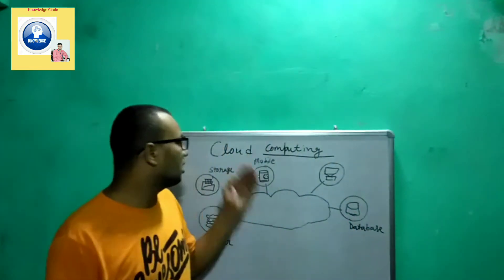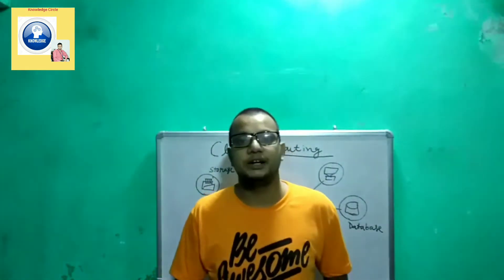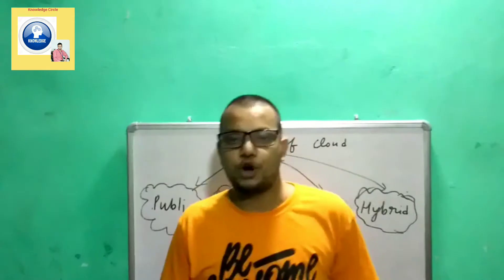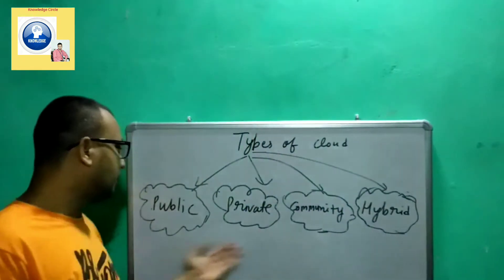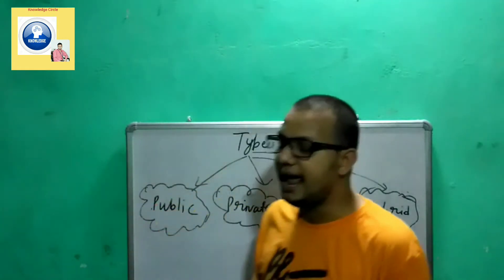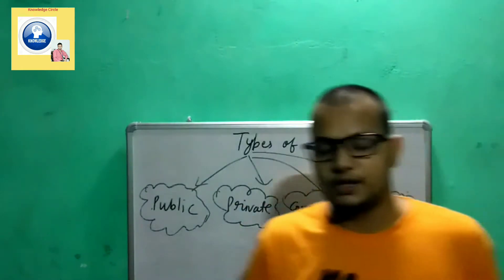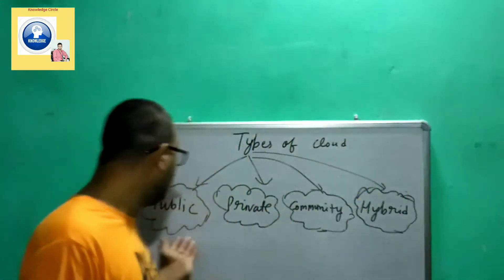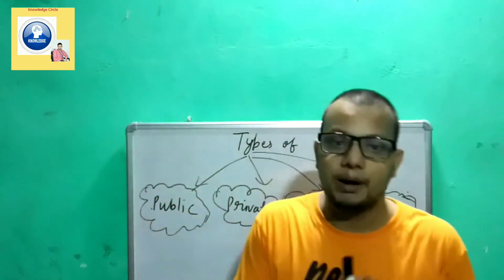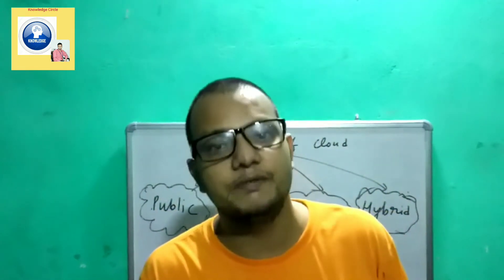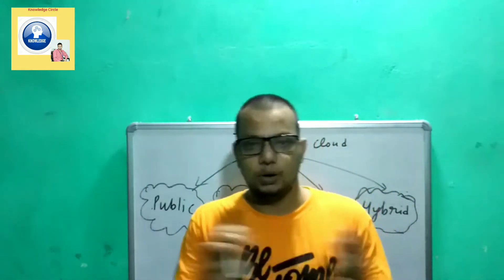Now let's talk about the different types of cloud computing. The cloud has been categorized into four categories: public, private, community, and hybrid. First, public cloud — as the name suggests, it is publicly accessible. Anyone can access and use it; there is no restriction.